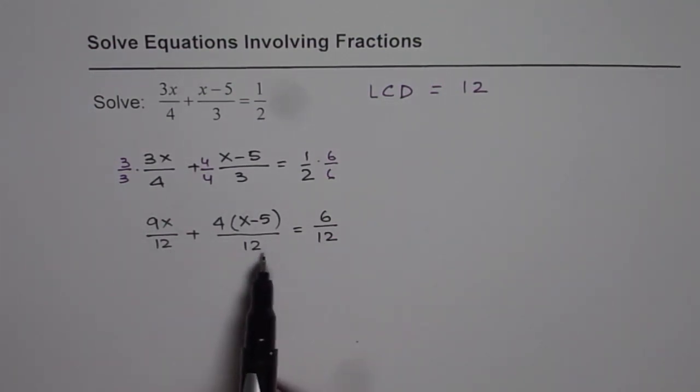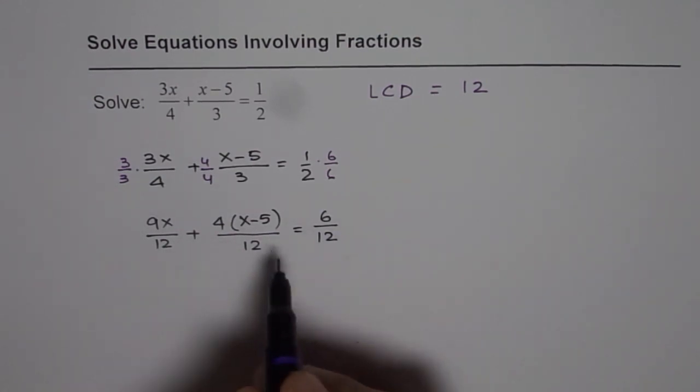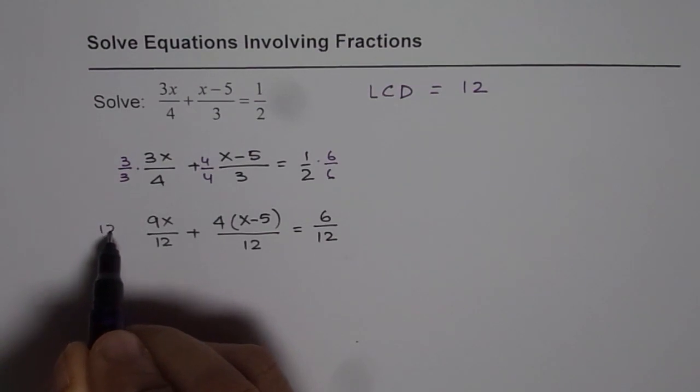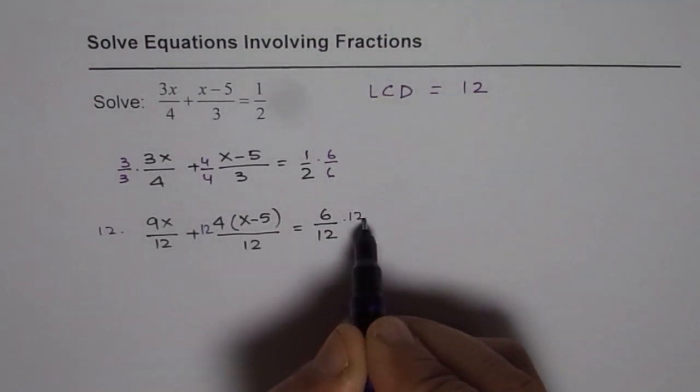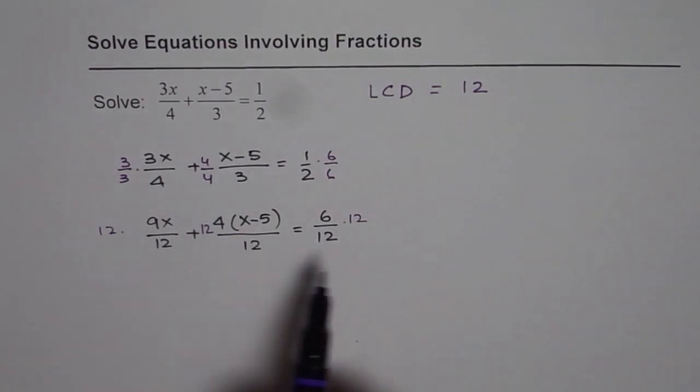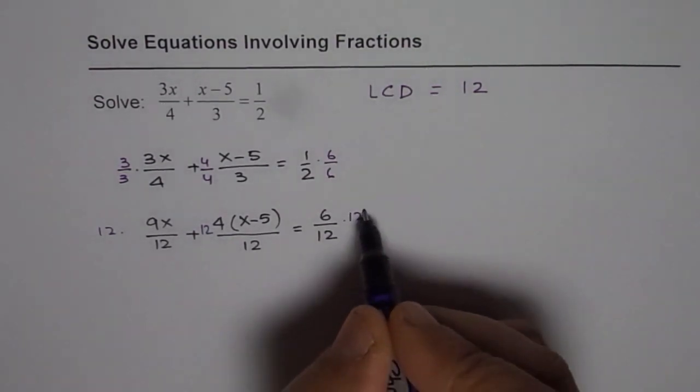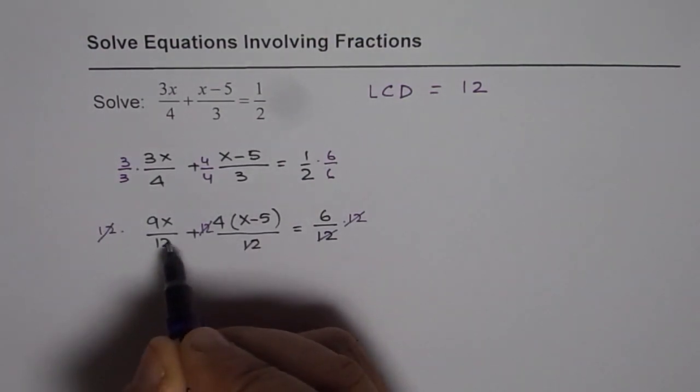As you know, in fractions if you have the same base you can combine the numerators. Now at this stage what you can do is you can multiply all these numbers by 12. If I do that, I am doing the same operation in all the sides. Then the denominators get cancelled off.